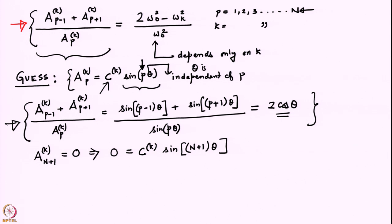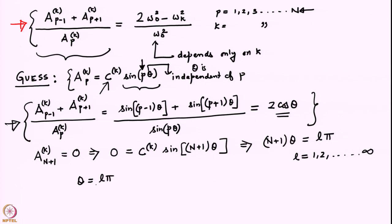Since C_k is not zero in general, sin((N+1)θ) = 0. We can immediately write that (N+1)·θ equals some integral multiple of π, i.e., (N+1)θ = Lπ, where L is a positive integer going from 1 to infinity. This implies that θ = Lπ/(N+1).